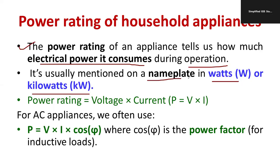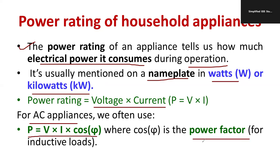For DC equipment, we can compute the power rating by multiplying the voltage and the current, where we consider the power factor to be unity for DC supply. For AC appliances, we need to consider P = VI cos φ, where cos φ is the power factor — the cosine of the angle between voltage and current.